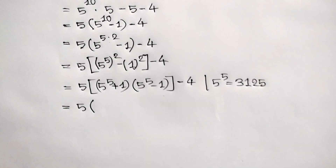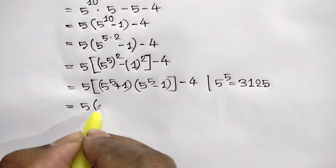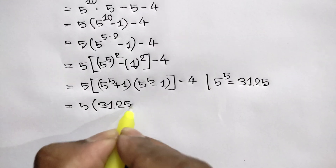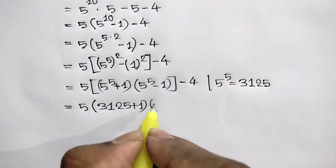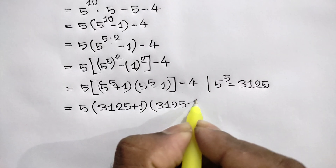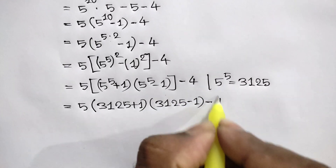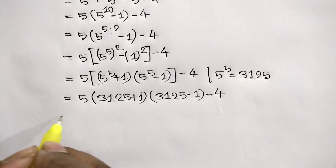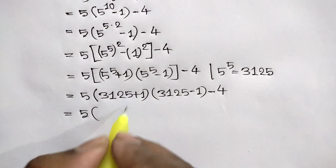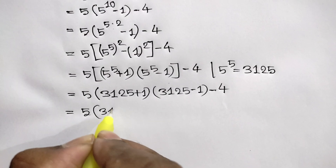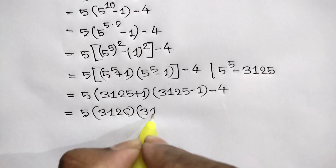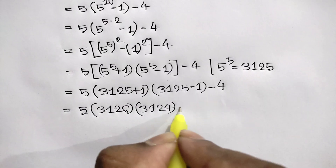So we write 3125 plus 1 times 3125 minus 1, and this negative 4 is equal to 5 times 3126 times 3124, and this negative 4.